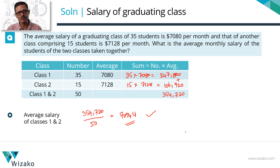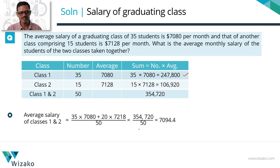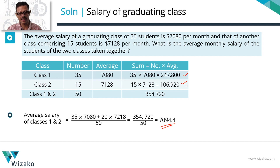Let's quickly see it in a printed form. Sum of the salaries of students of class 1 is 247,800; sum of the salaries of students of class 2 is 106,920; sum of the salaries of both classes taken together is 354,720. So their average salary is equal to 354,720 divided by 50, which equals 7094.4. Computing these numbers without a calculator is not that easy.